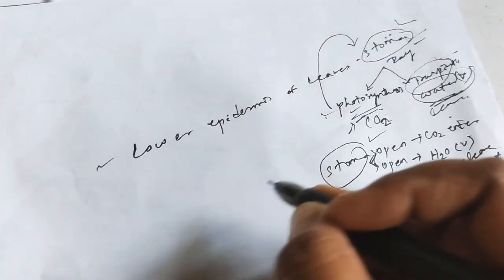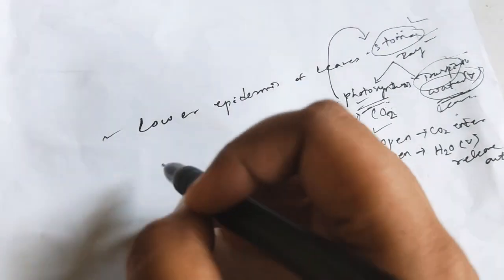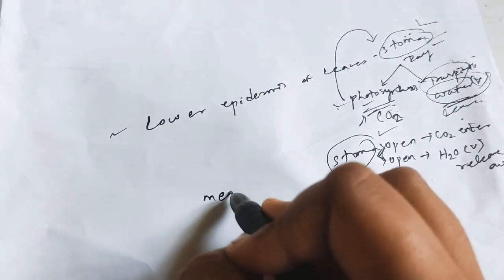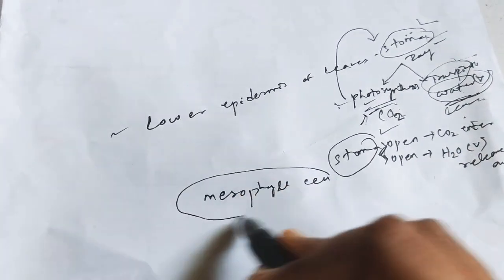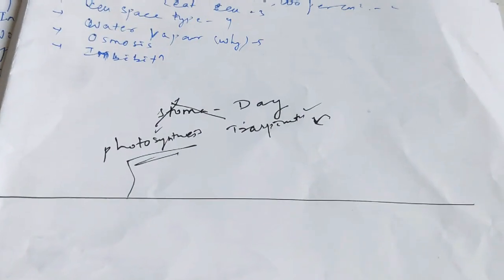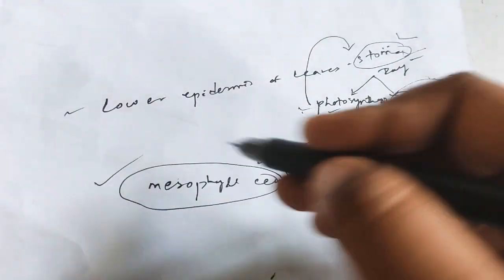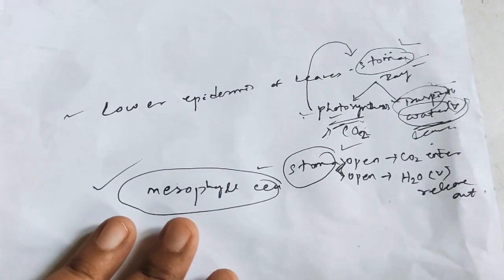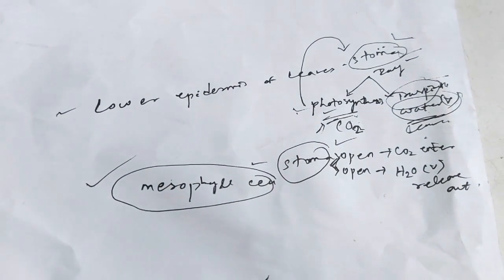Now let's look at types of leaf cells. Some special types of cells are found in the leaf, called mesophyll cells. This term will come up often while discussing the mechanism of stomatal transpiration. Mesophyll cells are mainly found in the leaf.